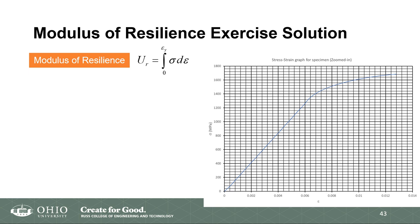The modulus of resilience is the amount of energy a material can absorb and release once the load is removed — a measure of the load the material can handle before plastic deformation. A high modulus of resilience means the material can take on a large load and release it; a low modulus means it cannot withstand much load before deforming. Our formula is the integral from 0 to the yield strain of stress with respect to strain — the area under that curve up to the yield strain.